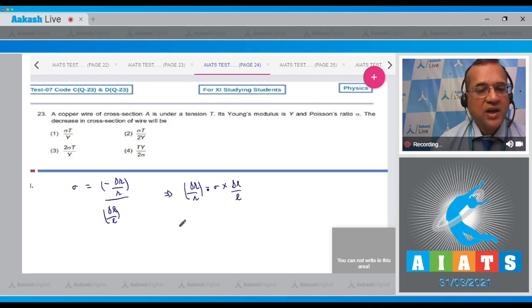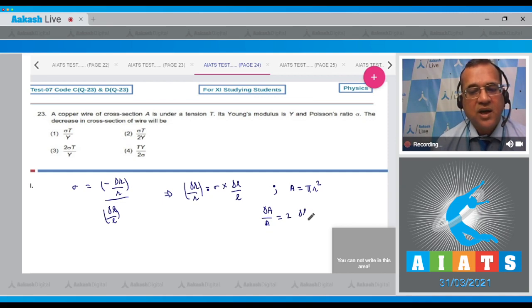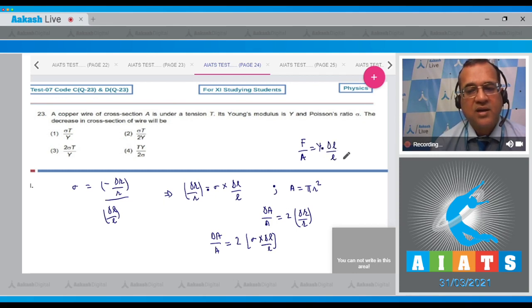The decrease in cross sectional area. You know that for the wire the area of cross section is pi R square. Therefore, delta A by A is equal to 2 delta R by R. So we have to fill the value of delta R by R. So delta A by A, the fractional area, this is equal to 2 sigma delta L by L. Now, when the wire is under the tension, then you know that F upon the cross sectional area is Young's modulus into delta L by L.